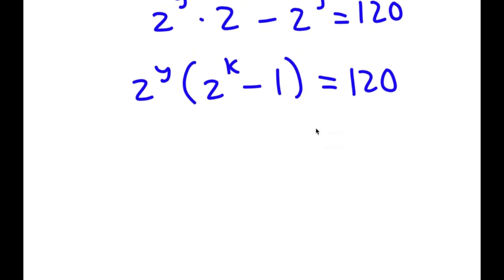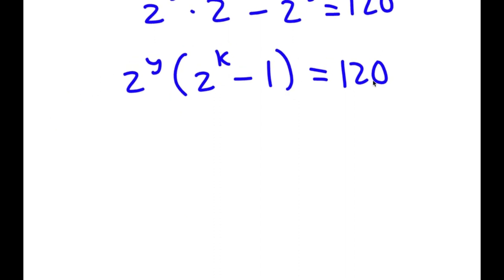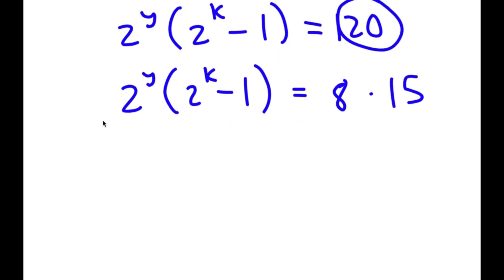This gives me two equations. We can think of 2 to the power of y as 8 and 2 to the power of k minus 1 as 15, because 2 to the power of any number is an even number. And 2 to the power of k is even, so 2 to the power of k minus 1 is odd. So we have an even number times an odd number equals 120.